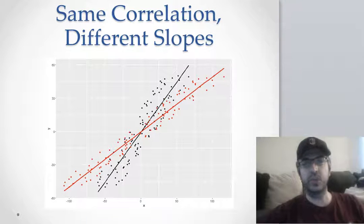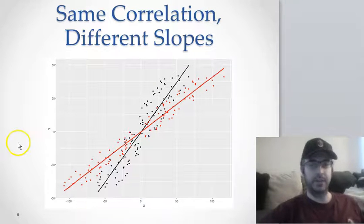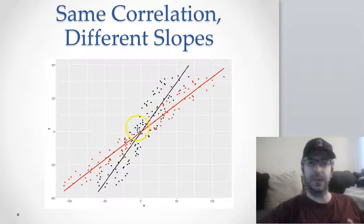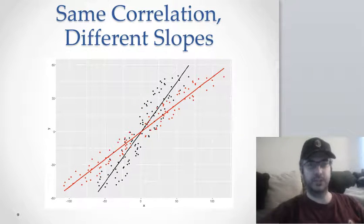This slide here is just to show you why this matters. These two lines here, if you look at the red line and then the red dots surrounding it, the black line, the black dots surrounding it, these two have roughly the same correlation, but they have different slopes.